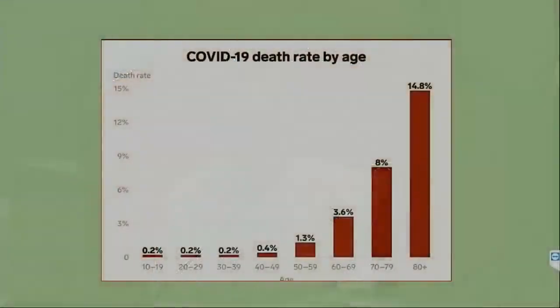Today I would like to speak a little about COVID. I would like to show you the chart of COVID-19 death rate by age. If you look at the chart, you will see that it affects people mostly between the ages of 60 and 80 — mostly 70 and 80. Those 80 plus have a 14.8 percent death rate, 79 at 8 percent, and 69 at 3.6 percent.